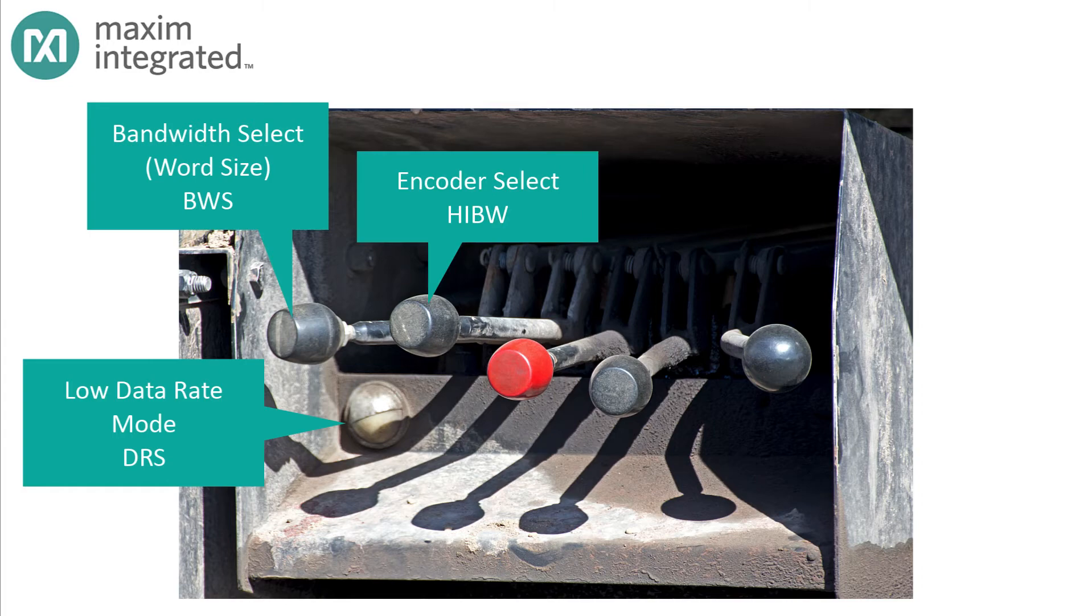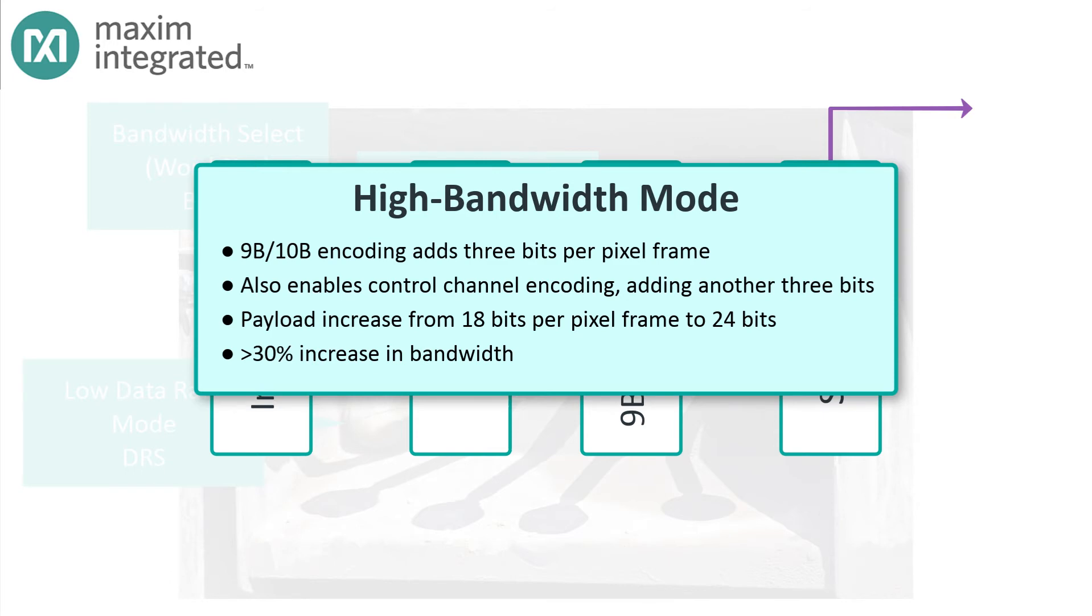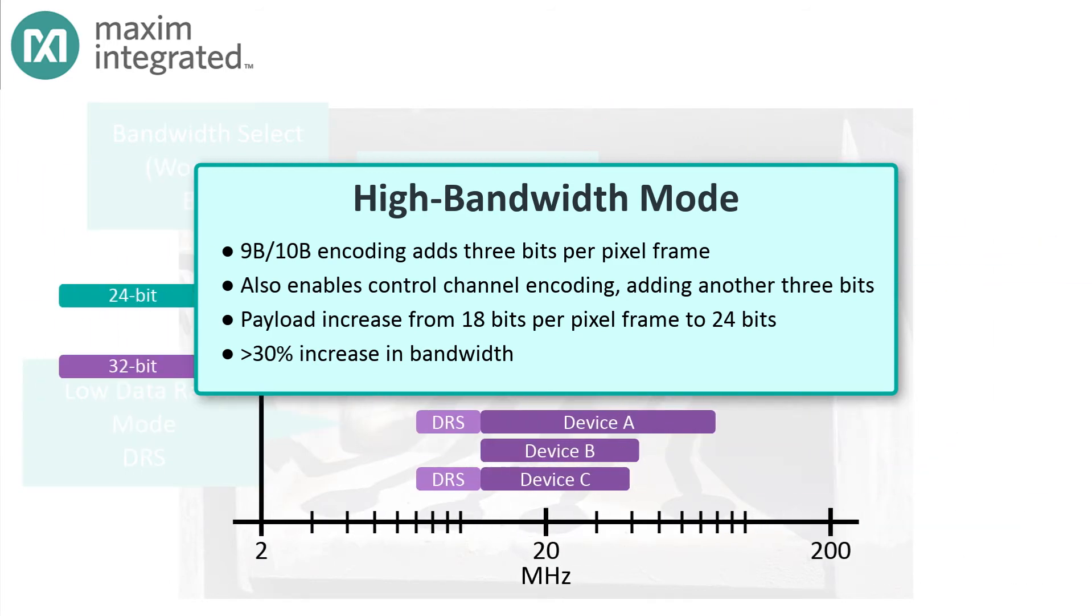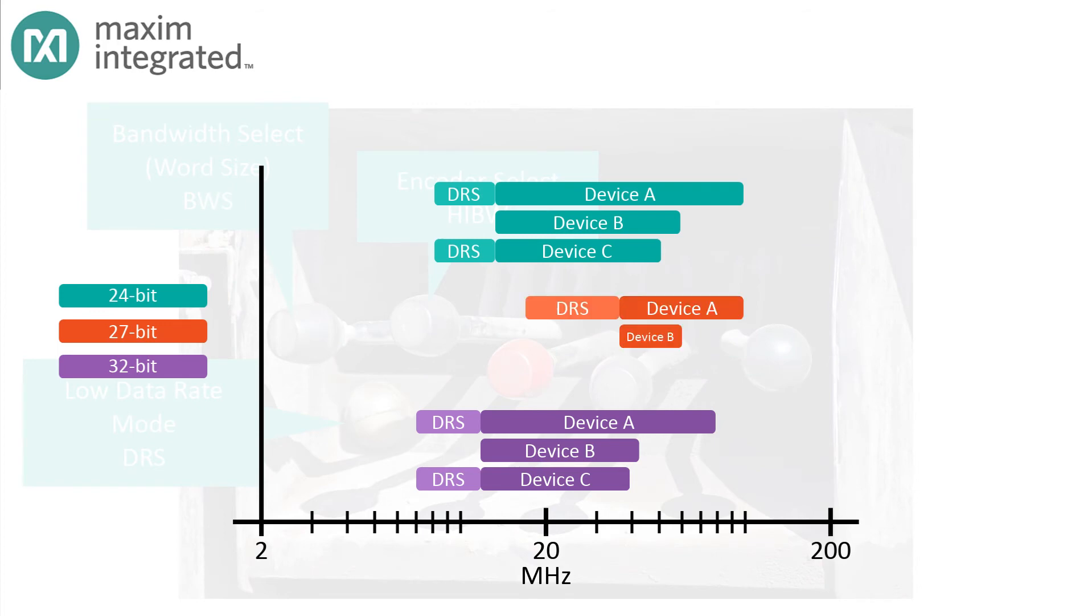The third lever is the encoder. While 8B-10B encoding is fine, 9B-10B is more efficient and lets you send more bits using the same serial bit rate. In some Maxim serializers, you'll see this setting called High Bandwidth Mode, or HIBW. When High Bandwidth Mode is enabled, the same 30 serial bits that used to contain only 24 pixel bits can carry 27 bits using 9B-10B encoding. You get an extra 3 bits and no penalty. But note that this encoding technique can't be used in all cases, so you have to check the datasheet.